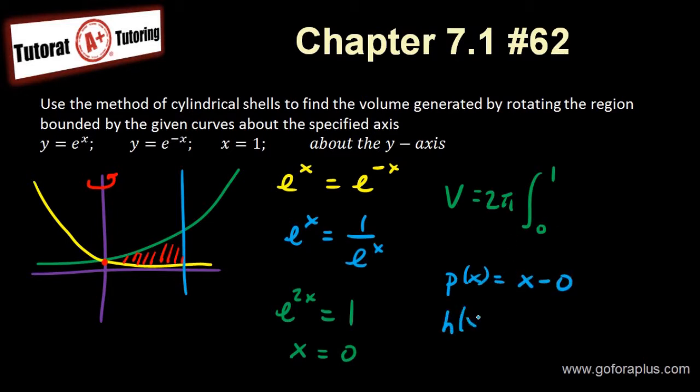How about h? h is basically the height of the rectangle. So the top function subtract the bottom function. The top function is e to the x. Bottom function is e to the minus x. So I have e to the x subtract e to the minus x.